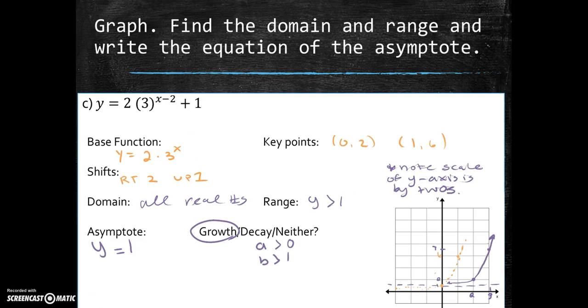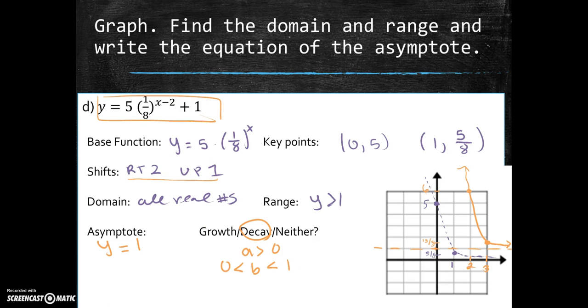We hope you paused. Here's what we're going to do. The base function is y equals 2 times 3 to the x. The key points are 0, 2, and 1, 6. Our shifts were right 2 and up 1. Domain was all real numbers. Range, y greater than 1. Asymptote, y equals 1. Growth. So then she connected her dots, she shifted, and bam! There you have it. Press pause. With this one, make sure it matches and then you're all good. Thank you.